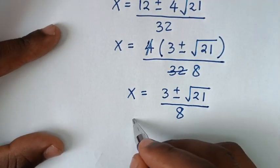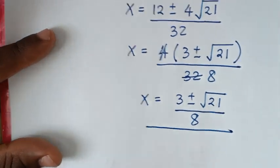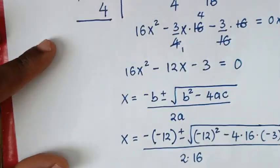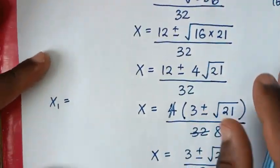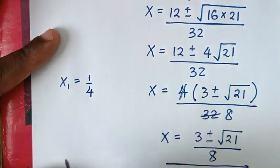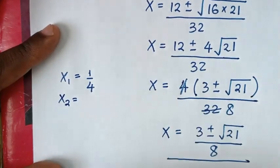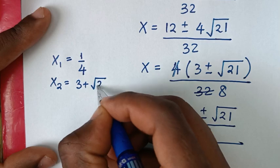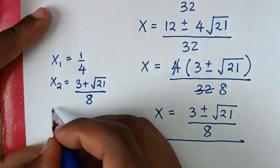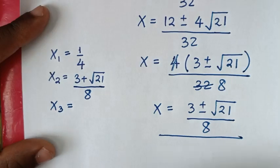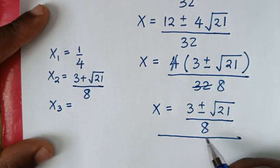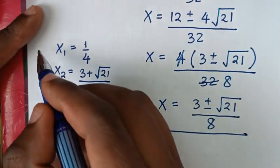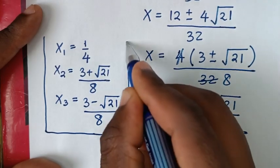Now this is the second solution, giving two values. Therefore our conclusion: the first value of x is 1 over 4. The second value of x is 3 plus square root of 21 over 8. The third value of x is 3 minus square root of 21 over 8. So these are all the values of x in this problem.